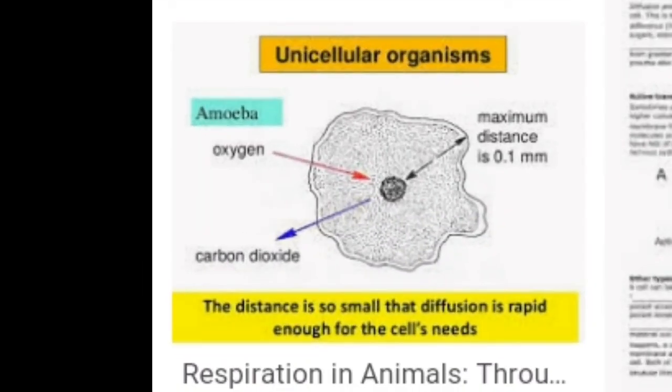In larger multicellular animals, diffusion is too slow to meet the demands of the living tissues, because the number of cells is far greater than in unicellular organisms. Different organisms like fishes, amphibians, and mammals use different means for gaseous exchange. In plants, the gaseous exchange mechanism is very simple.